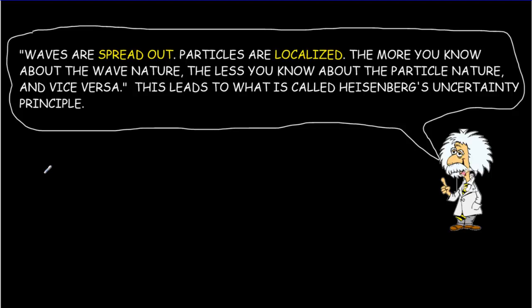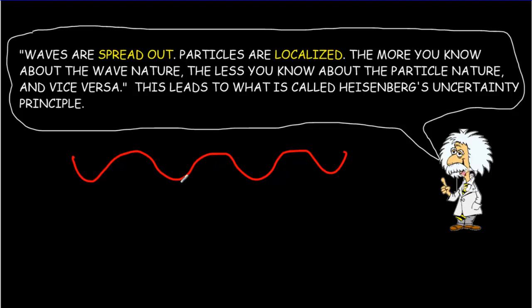This really comes down to the idea of wave-particle duality. An electron has both a particle nature and a wave nature. If we know a lot about the wave nature — waves are really spread out — we don't know much about the localization of the particle. Whereas particles are very localized; if we know a lot about the particle nature, then we don't know much about the wave nature. That leads to the Heisenberg Uncertainty Principle.